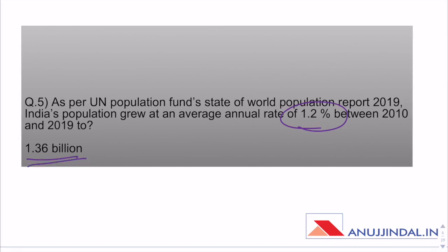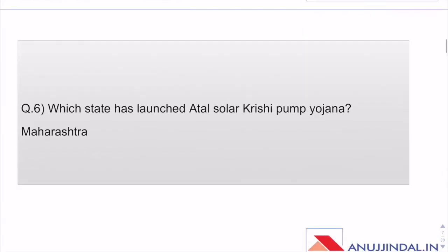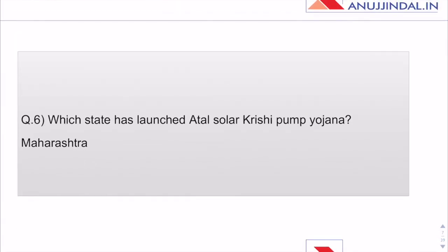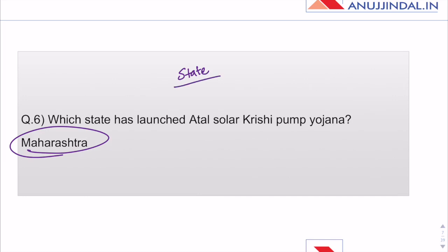As per the UN Population Fund's State of World Population Report, India's population grew at an average annual rate of 1.2% between 2010 and 2019 to 1.36 billion. I had covered it in Spotlight and am also covering it in the Phase 2 Current Affairs magazine in detail.